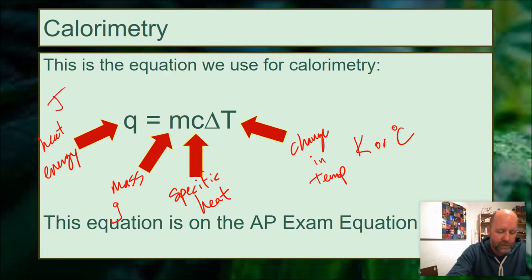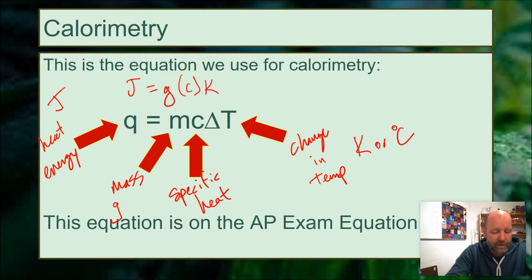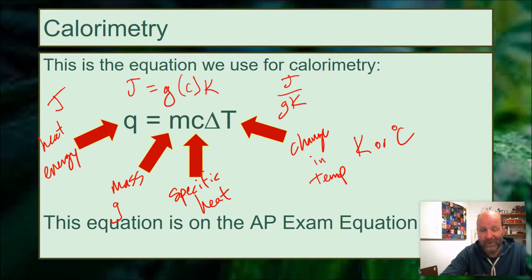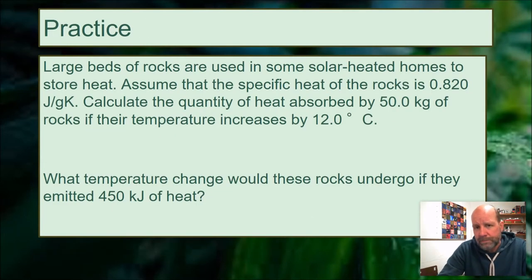The heat energy will be in joules. To figure out the units for c: joules = grams × c × kelvins, so c works out to joules per gram·kelvin. Sometimes you'll see joules per kilogram·kelvin or kilojoules per kilogram·kelvin — essentially a unit of energy per unit of mass times kelvins or degrees Celsius. Those are your units for c.